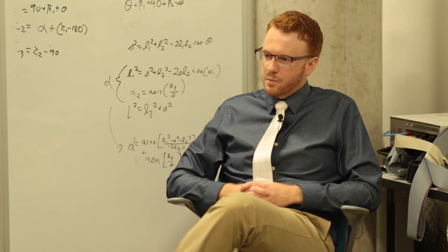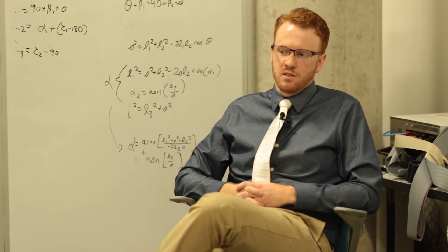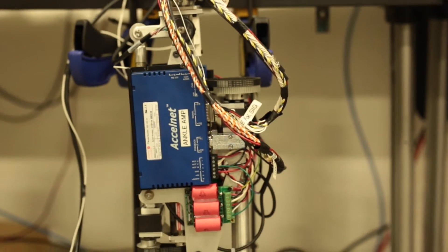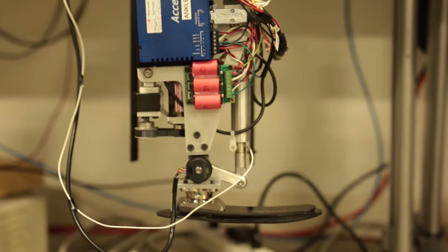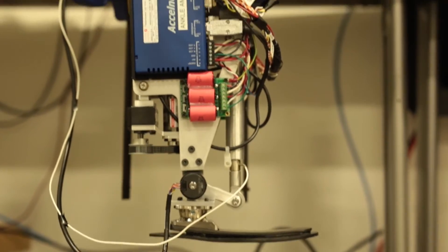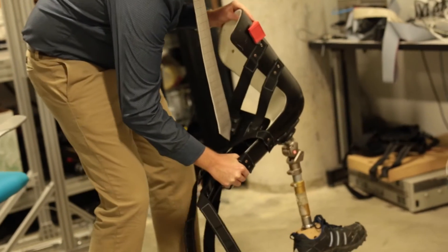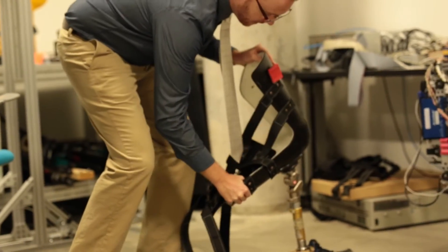A robotic prosthesis is different than a conventional prosthesis in two main ways. One, a robotic prosthesis can measure what's happening as someone's walking and therefore can adapt to changes in the environment or disturbances that might cause someone to trip or fall.